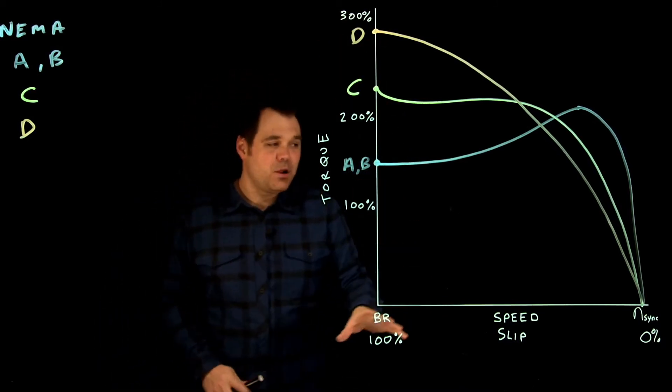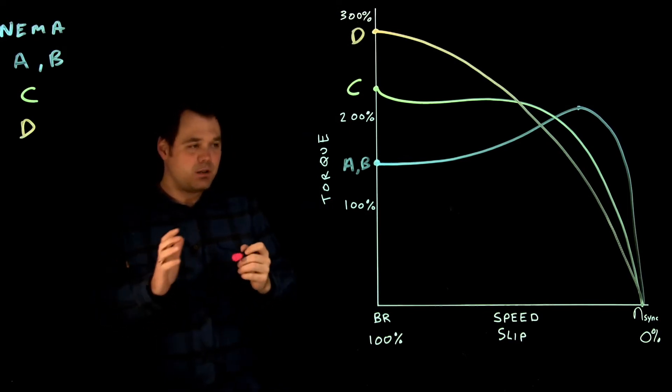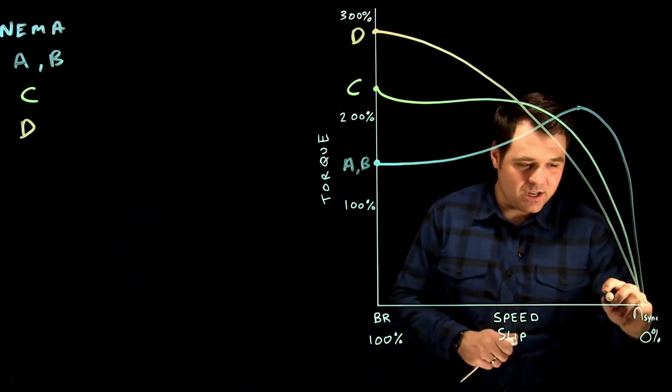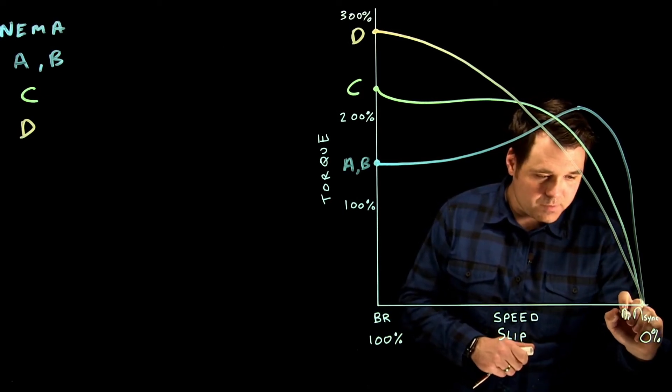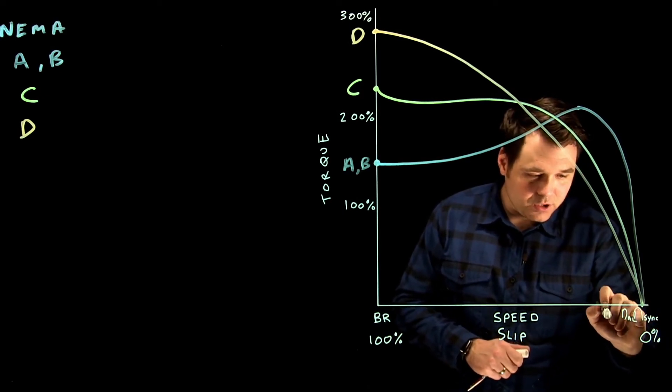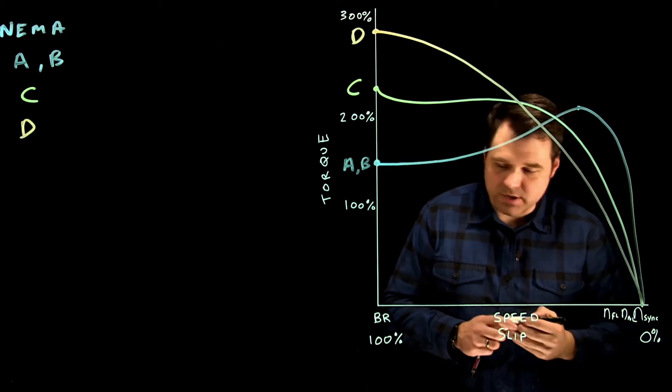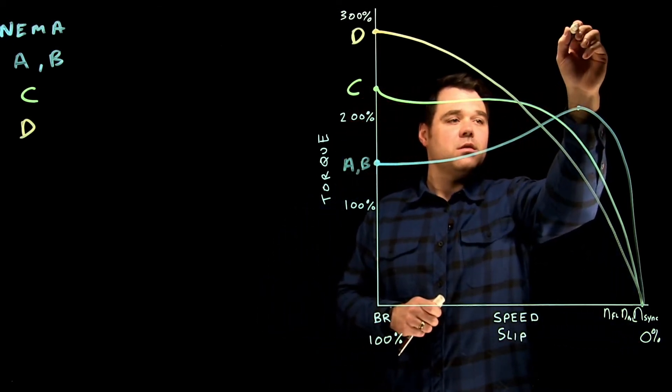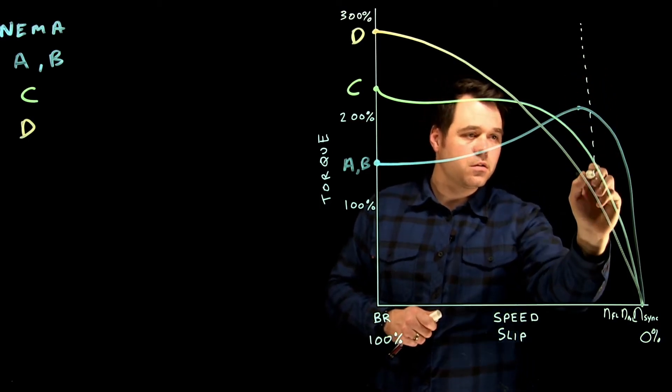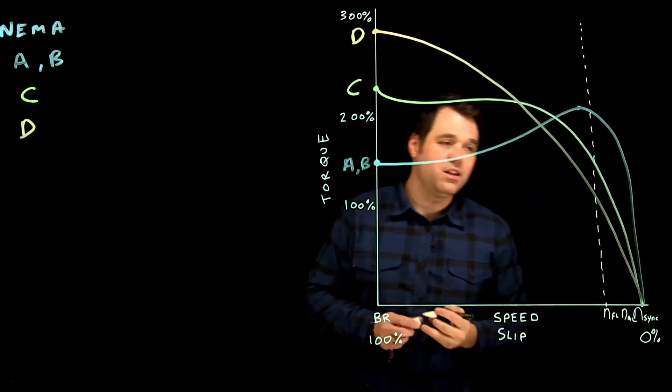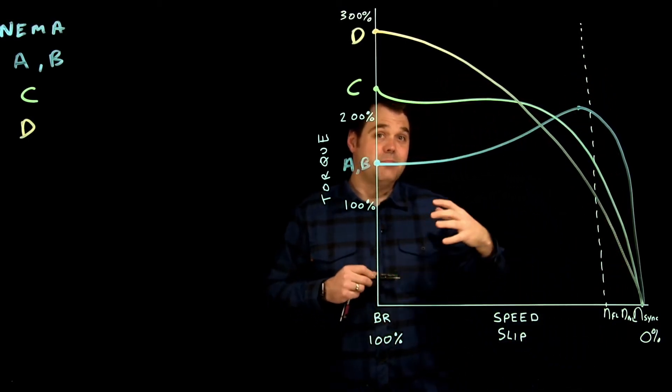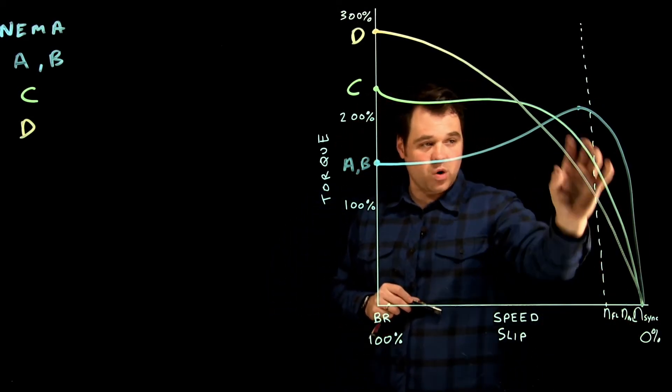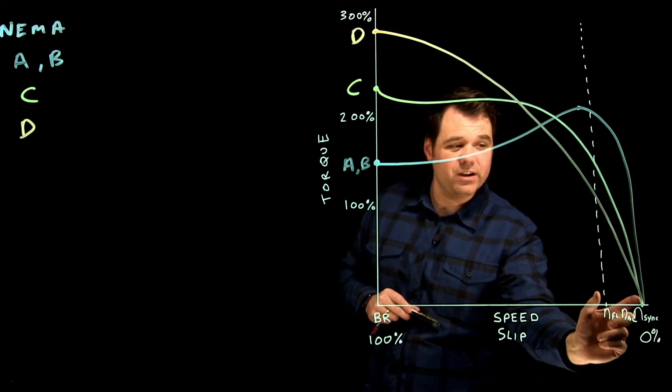Now, I want to stop here for a second. We got to think about when we think about speed, our synchronous speed is here. Our no load speed is right there, and our full load speed is right there. So the actual operating range for a motor is right in here. That slip ends up being a very good representation of the torque curve in the operating range of a motor.